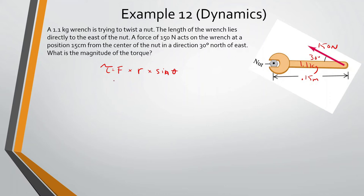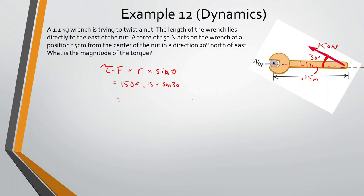So let's just plug in what we have. Force equals 150, radius equals 0.15, and for sine — this is the tricky part. You want to look at the axis of rotation, draw a line from it, and find the angle between the axis and the force direction. That angle is 30 degrees. So: 150 times 0.15 times sine of 30, and we get 11.25 newton-meters.